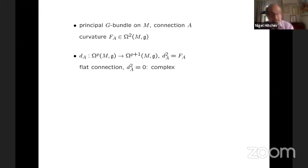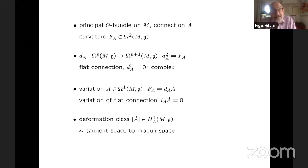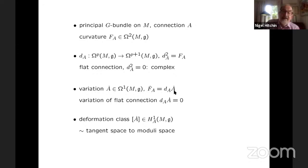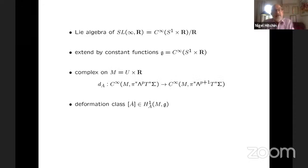So how do we discuss infinitesimal deformations of flat connections? Well, let's go back and look at the finite-dimensional situation. So if you have a principal G bundle, then we have a curvature and we have an exterior covariant exterior derivative, which if the curvature is zero gives us a complex. And the variation of a connection is given by a one-form with values in the algebra bundle. So the variation of the curvature is D_A of Ȧ. If you want a variation of a flat connection, then D_A Ȧ = 0. So you get a deformation class in the first cohomology of this complex, and in good situations this is identified with a tangent vector to the moduli space of flat connections.